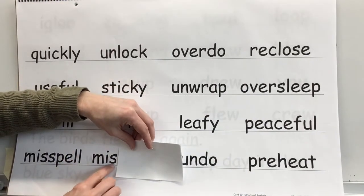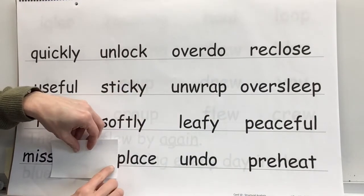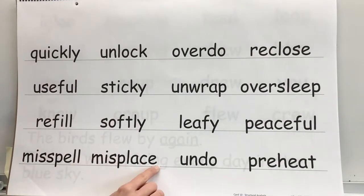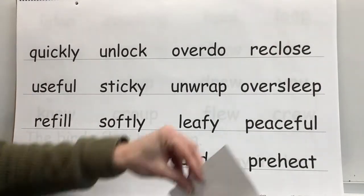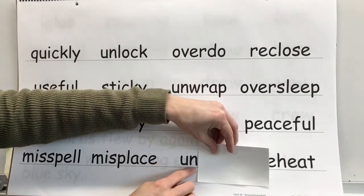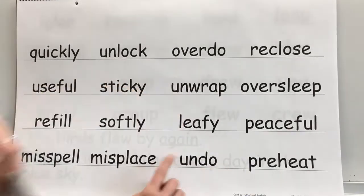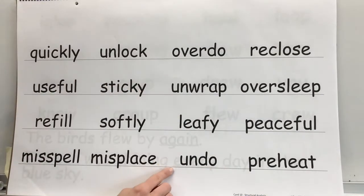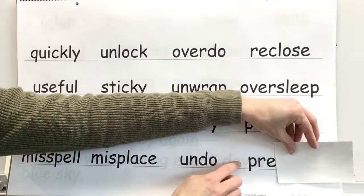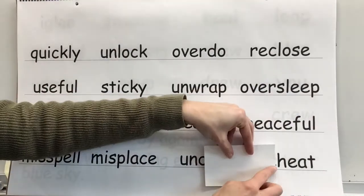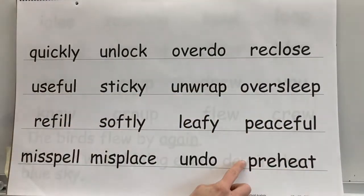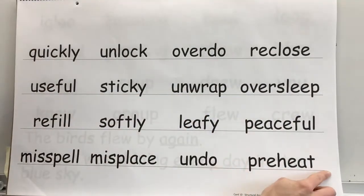Affix: mis. Base word: place. Whole word: misplace. Affix: un. Base word: do. Whole word: undo. Affix: pre. Base word: heat. Whole word: preheat.